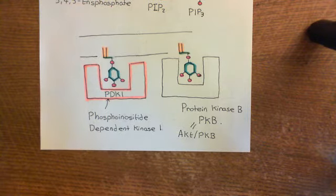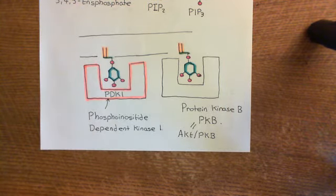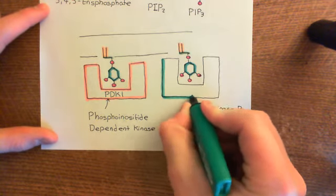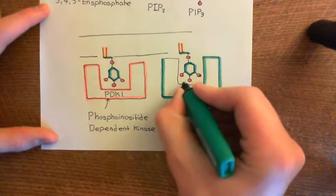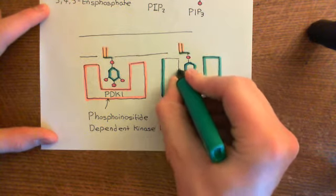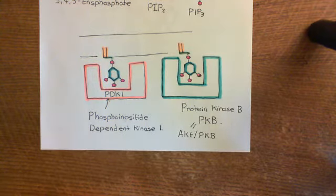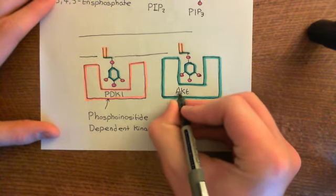The initials AKT don't stand for the names of the people who discovered it — they stand for something related to the way it was discovered. So we'll know it as AKT, or protein kinase B, and colour it in turquoise. It's going to be localised to the plasma membrane by binding to this PIP3, which transiently appears in the membrane after being created, before the PTEN enzyme has had the chance to break it down.